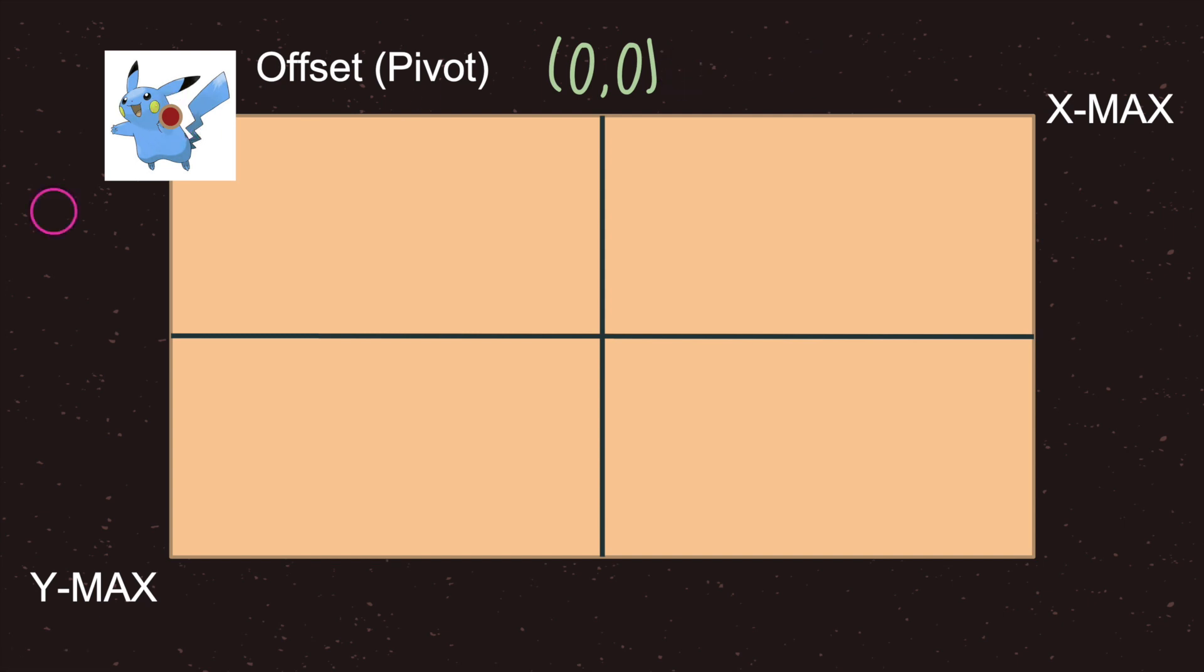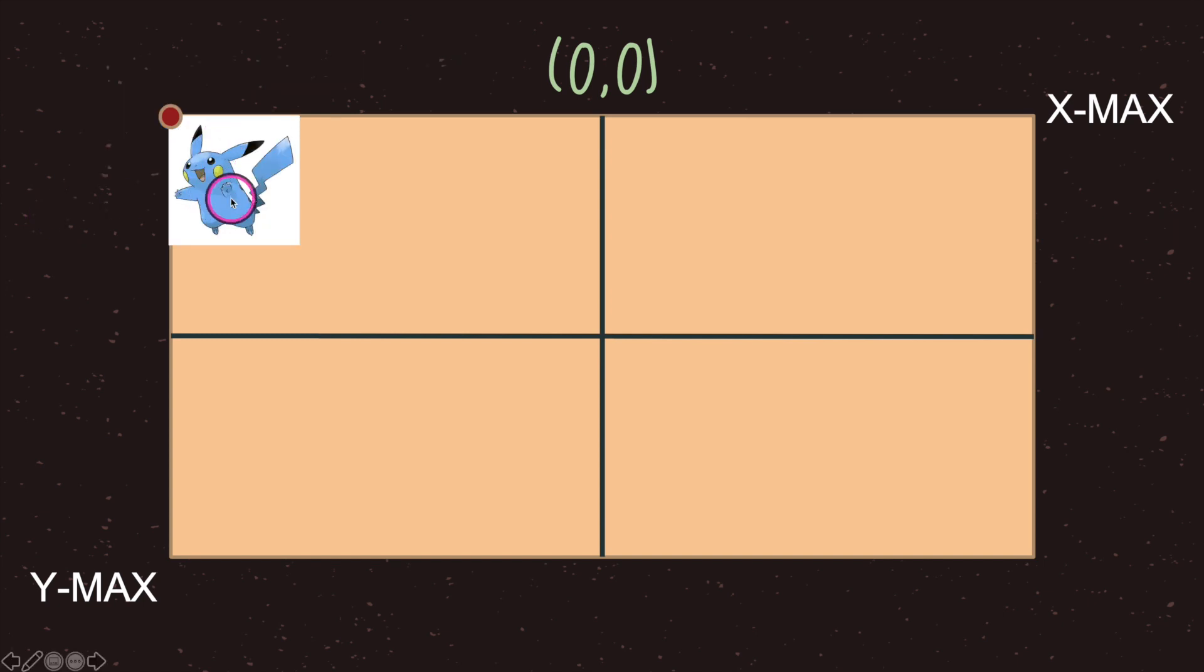One cool thing about the offset is that even when we change our sprite image it will not affect our offset. So let's move our Pikachu and notice how our Pikachu moves in relation to our offset. However our offset value does not change.